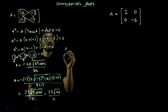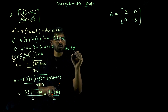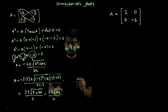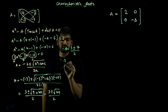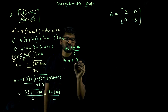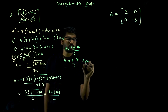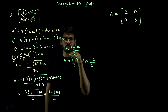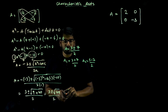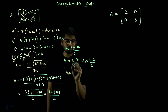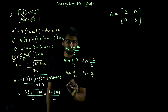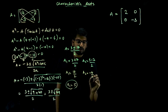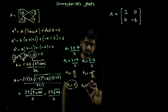Lambda equals 3 plus or minus 7 over 2. Splitting into two values: lambda 1 is 3 plus 7 over 2 equals 10 over 2 equals 5, and lambda 2 is 3 minus 7 over 2 equals minus 4 over 2 equals minus 2.